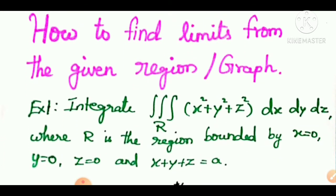Let's do the sum here: the integral of x squared plus y squared plus z squared, dx dy dz, where the region R is bounded by x equals 0, y equals 0, z equals 0, and x plus y plus z equals a.